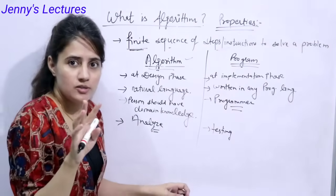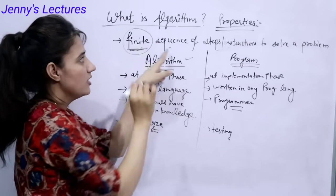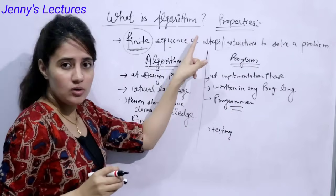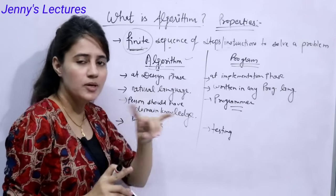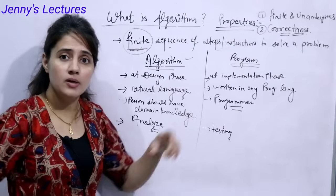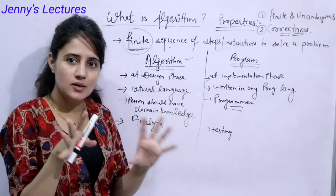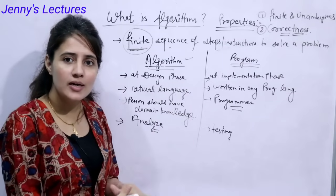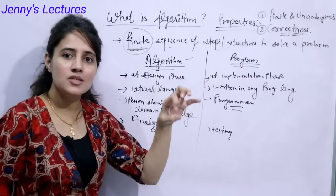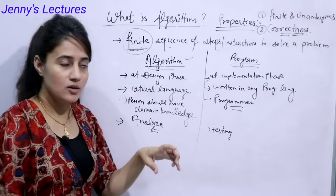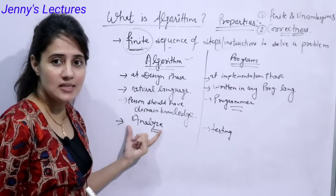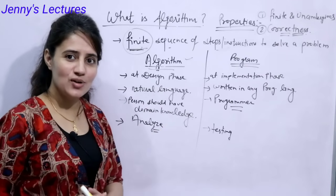Now the properties of an algorithm. First, as stated in the definition — finite sequence of steps — an algorithm should be finite and unambiguous: there should be no ambiguity, it should be clear. Second is correctness: the algorithm should be correct. Using the tea example, if you follow those steps you should get tea — not cappuccino. If you get the proper output, your algorithm is correct. That's it for this video; in the next video we'll discuss how to analyze an algorithm.